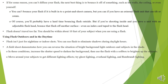Using flash outdoors and in the daytime. Flash is not just for nighttime or indoor shoots. You can use flash to eliminate shadows during daylight hours too. A field shoot demonstrates how you can reverse the situation of bright background light outdoors and a subject in the shade. In these conditions, increase the shutter speed to darken the background, then use the flash with a softbox to brighten up the subjects. Move around your subject to get different lighting effects. Try ghost lighting, overhead lighting, and Rembrandt lighting.